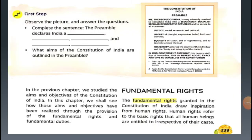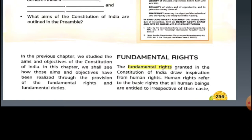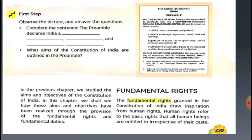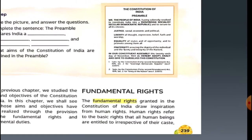In the previous chapter we studied the aims and objectives of the constitution of India. In this chapter we shall see how those aims and objectives have been realized through the provisions of the fundamental rights and fundamental duties. First, we see fundamental rights.